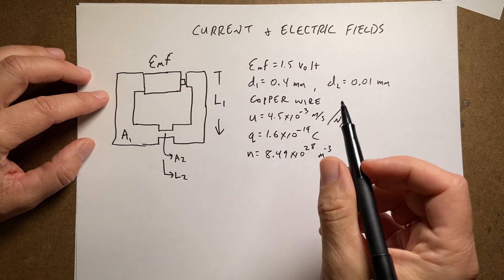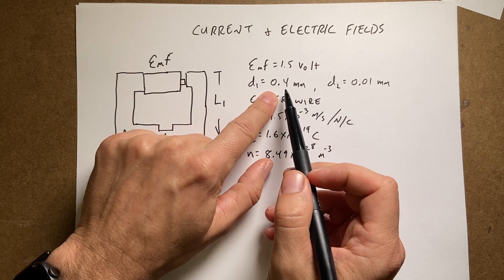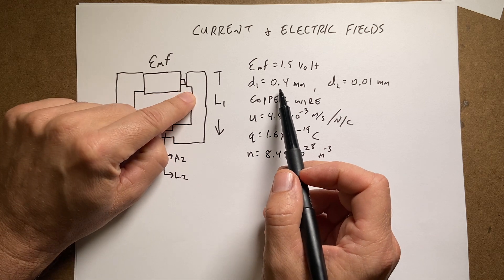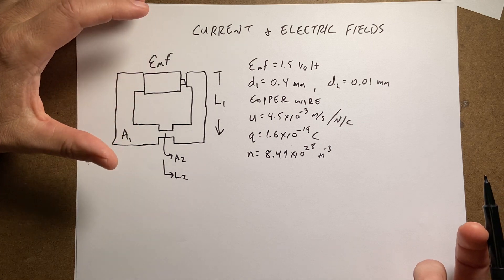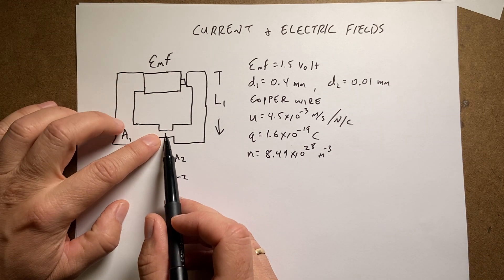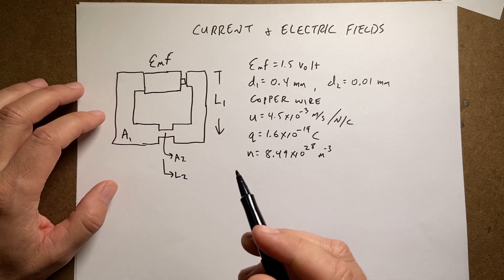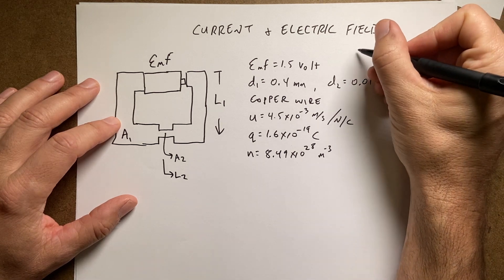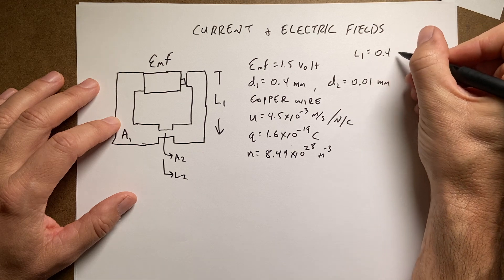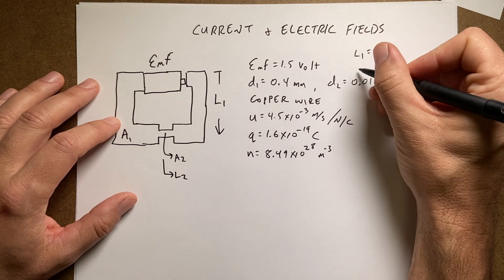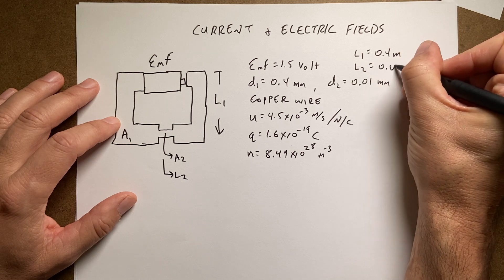For this wire, I've picked a reasonably thick wire of 0.4 millimeter diameter — I'm giving diameter because that's what's common. And then this one is really, really tiny with a diameter of 0.01 millimeters. The length L1 is 0.4 meters, and then L2 is 1 centimeter, so 0.01 meters.